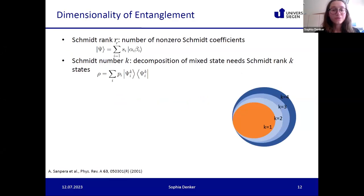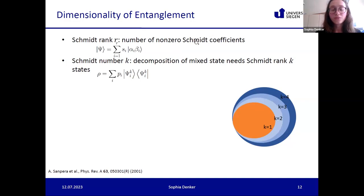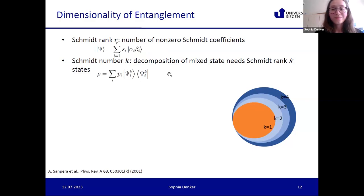One can also detect the dimensionality of entanglement using this scheme. The Schmidt rank is the number of non-zero Schmidt coefficients in the vector Schmidt decomposition. For density matrices, we consider the Schmidt number k: if I decompose rho, I need at least one vector psi with Schmidt rank k, and then rho has Schmidt number k.